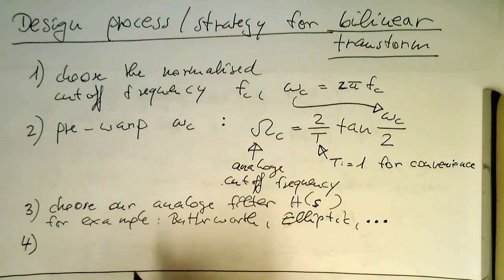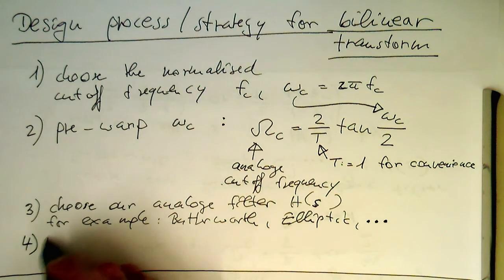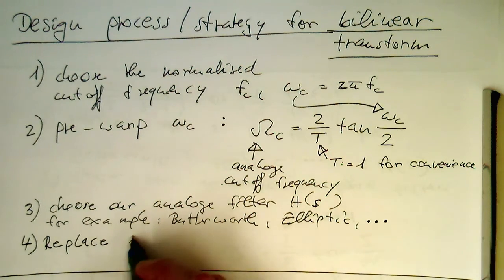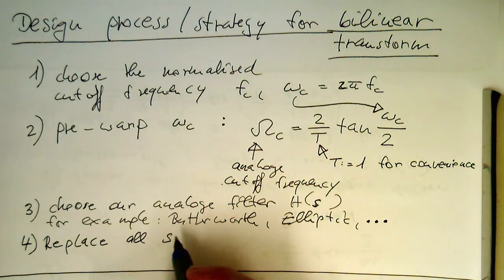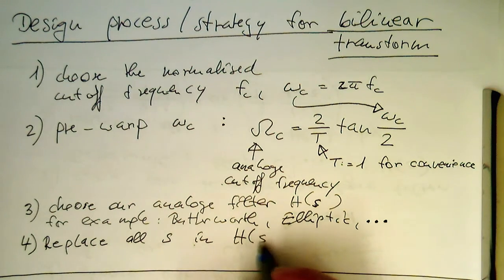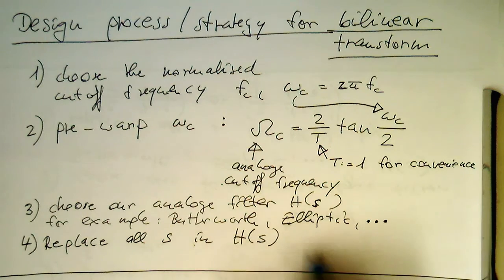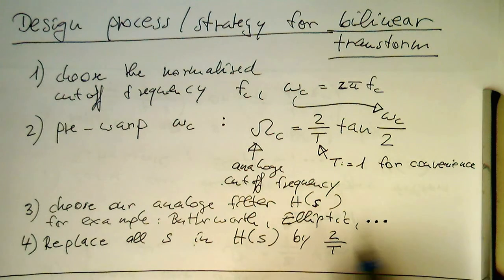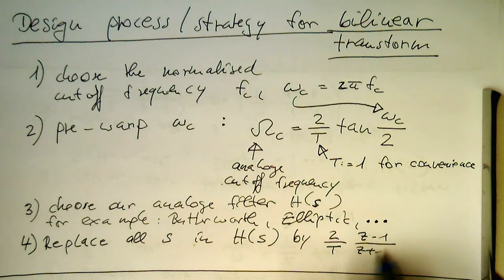So once we've done this, then we just replace all s in h of s. We're going to replace all s by 2 divided by t, z minus 1, divided by z plus 1.